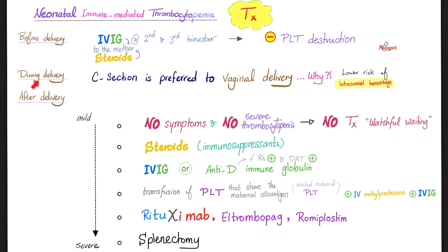Treatment is divided into before delivery, during delivery, and after delivery. Before delivery: give IVIG and steroids to the mother as immunosuppressants to stop and suppress platelet destruction. During delivery: deliver via C-section. After delivery: if the baby has no symptoms, no treatment is needed. If symptomatic, give steroids, IVIG, and platelet transfusion if it's really bad. Immunosuppressants such as rituximab, eltrombopag, and romiplostim can help boost platelets. As a last resort, since the platelets are being destroyed in the spleen, splenectomy can be performed.